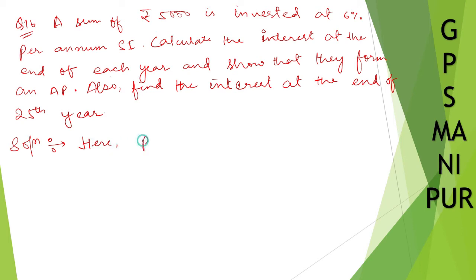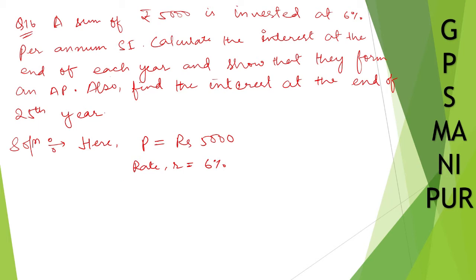What is the principal amount? Principal amount, let us write down by P — it is rupees 5,000. And what is rate? Rate, which is R, let us write down, which is 6%. So, we need to calculate the end of each year, so time is equal to 1.